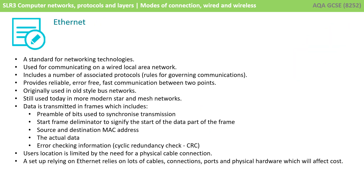To recap Ethernet: it's a standard for networking technologies used for communicating on a wired local area network. It includes a number of associated protocols — rules for governing communications — and provides reliable, error-free, fast communication between two points. It was originally used in old-style bus networks but is still used today in more modern star and mesh networks. Data is transmitted in frames, which include a preamble, a start frame delimiter, source and destination MAC addresses, the actual data, and error checking information.